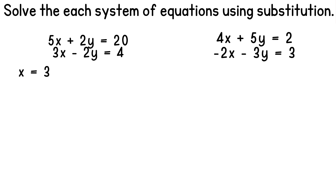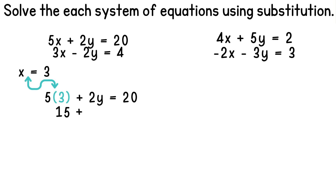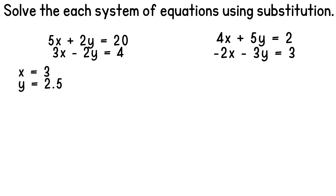Now that we have one solution, we can plug this value into one of our original equations to find the other. We'll use the first equation and replace x with 3, giving us 5 times 3 plus 2y is equal to 20. Multiplying 5 and 3 gives us 15 plus 2y is equal to 20. Subtracting 15 on each side gives us 2y is equal to 5. Dividing both sides by 2 gives us y equals 2.5. So our solution is x equals 3 and y equals 2.5.